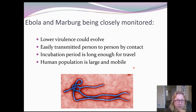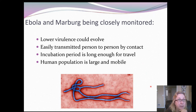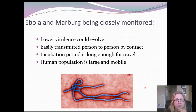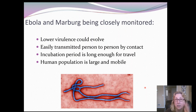Lower virulence could be of significant concern because that would mean it could be spread to many more people. Ebola is easily transmitted by contact — any bodily fluid, even sweat that hits your skin can transmit it — but it is not easily transmitted through the air, which is a very good thing. It does have a long incubation period of about 10 to 14 days, which is plenty of time for people to travel.